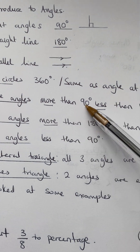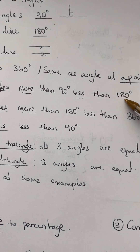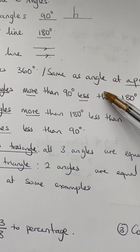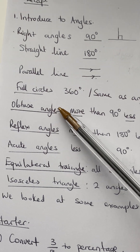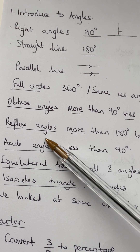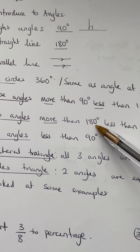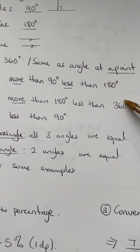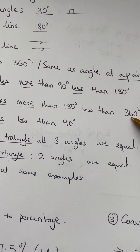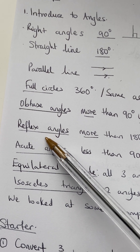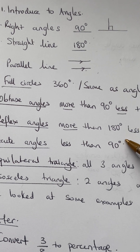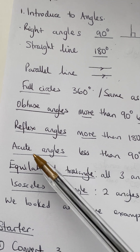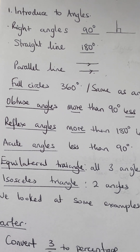Obtuse angles are more than 90 degrees but less than 180, so any angle from 91 to 179 falls in that range. Reflex angles are more than 180 but less than 360, so any angle between 181 and 359 degrees is a reflex angle. We did all this yesterday, so this is just a recap.